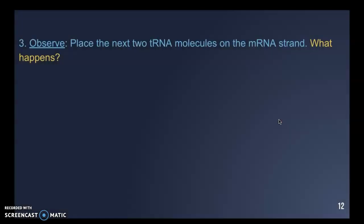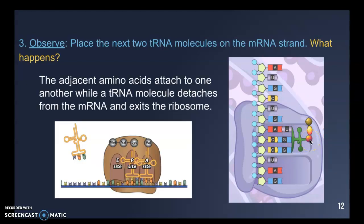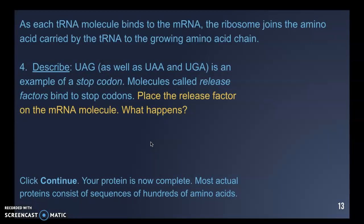They then asked you to place two more tRNA molecules on the mRNA strand. Each successive codon brings in a corresponding tRNA carrying its amino acid. The tRNAs come in, drop off their amino acid, and then leave to pick up another. The amino acids join together in a chain — a polypeptide chain — which will ultimately fold to make the protein.